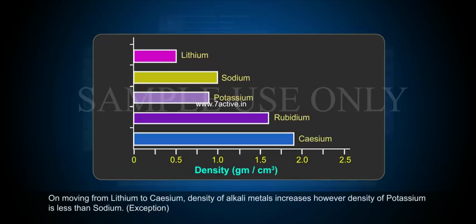On moving from lithium to cesium, density of alkali metals increases. However, density of potassium is less than sodium. Exception.